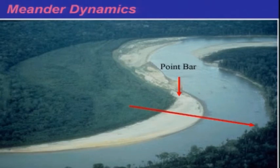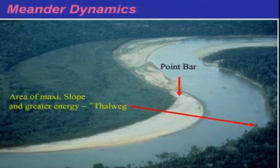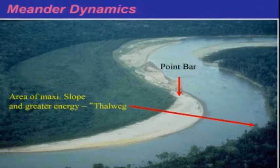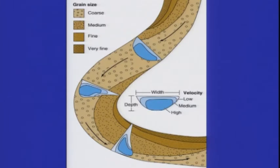This point bar is the area of greater slope. The area of maximum slope and greater energy — where velocity is highest — is termed the thalweg. Looking at the cross-section channel morphology, the grain size will vary from the deeper part to the shallower one. In the deeper part of the meander you will have coarser sediment, and as you move to the inner side it will become progressively finer. In terms of velocity, it will be high on the outer side and lower on the inner side.